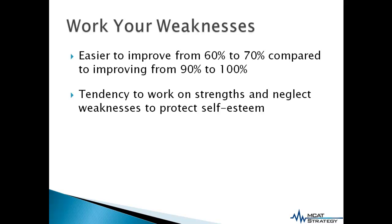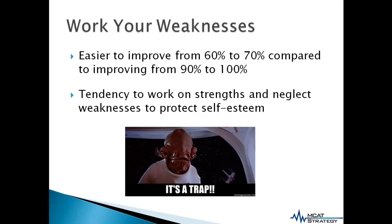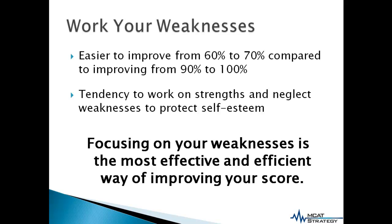This tendency arises because we tend to want to do things that we are good at and avoid things we are not good at, because if we don't do well it makes us feel bad. However, this tendency is a trap and should be absolutely avoided. Remember to focus on your weaknesses, because focusing on your weaknesses is the most effective and efficient way of improving your MCAT score. One analogy we can all understand is that it is much easier to improve grades from 60% to 70% than from 90% to 100% — your efforts yield diminishing returns over time.